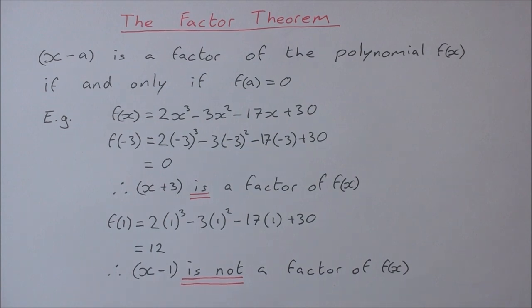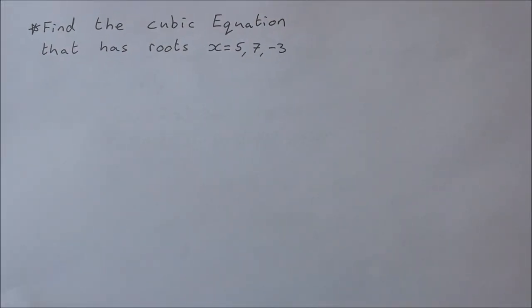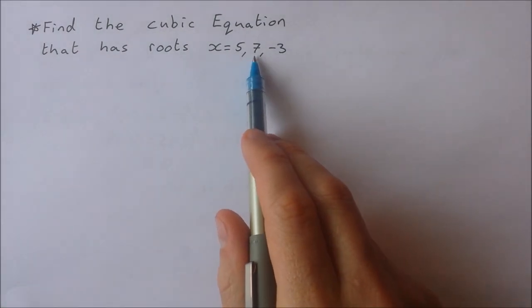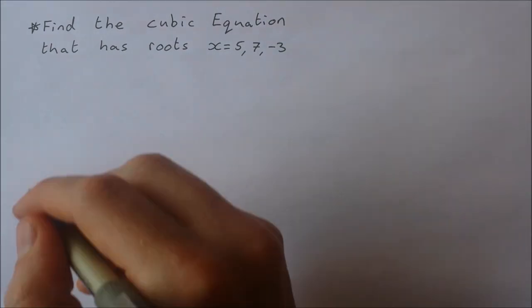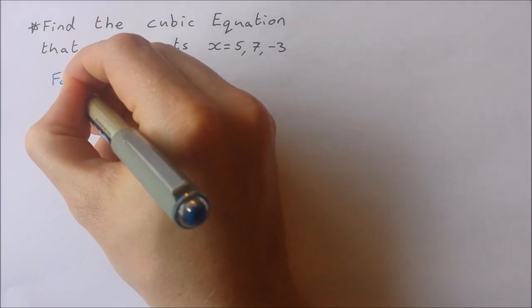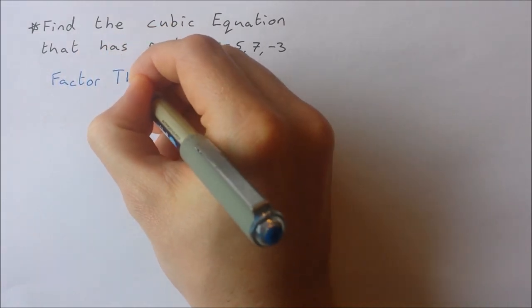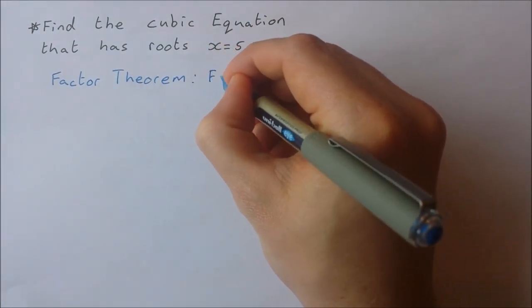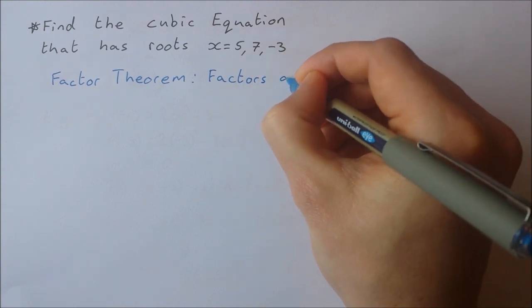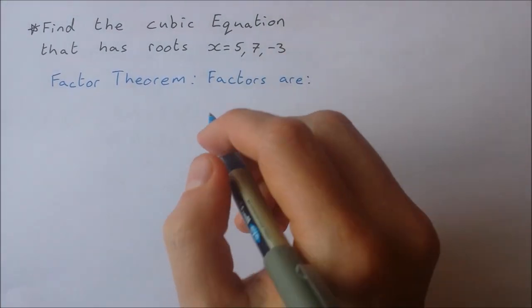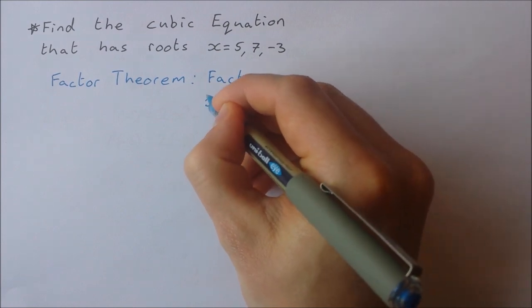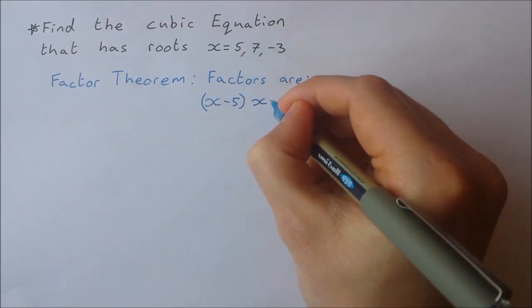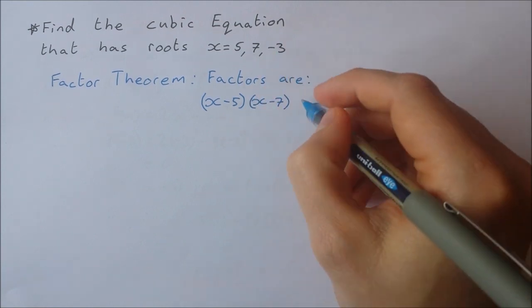Let's take a look at a couple of questions where the factor theorem can be put into use. The first one is: find the cubic equation that has roots x equal to 5, x equal to 7, and x equal to minus 3. Using the factor theorem, we know that the factors are x minus 5, x minus 7, and x plus 3.